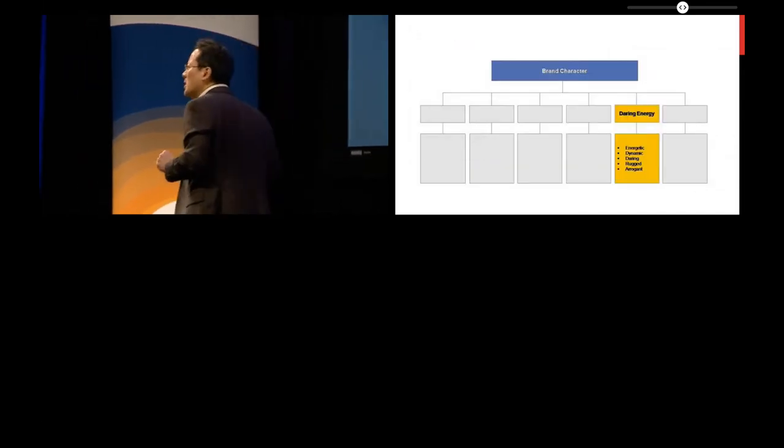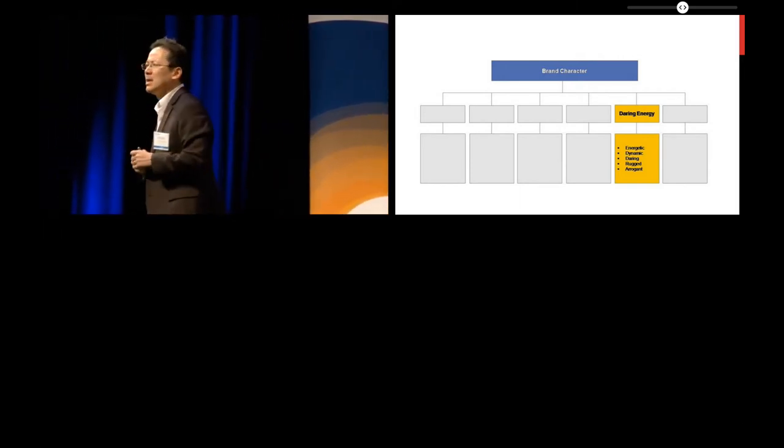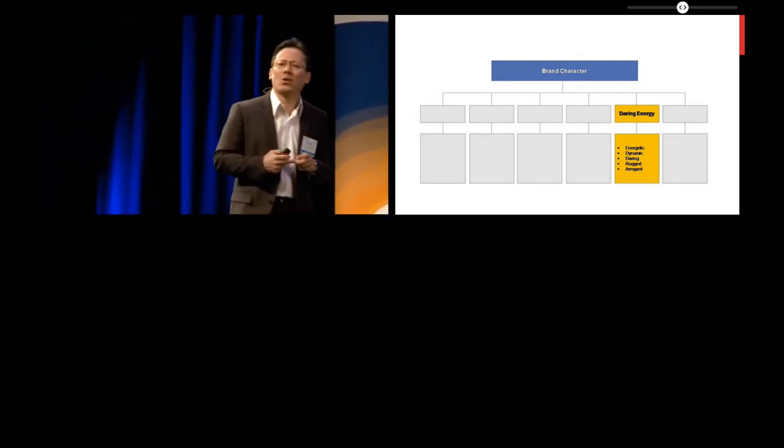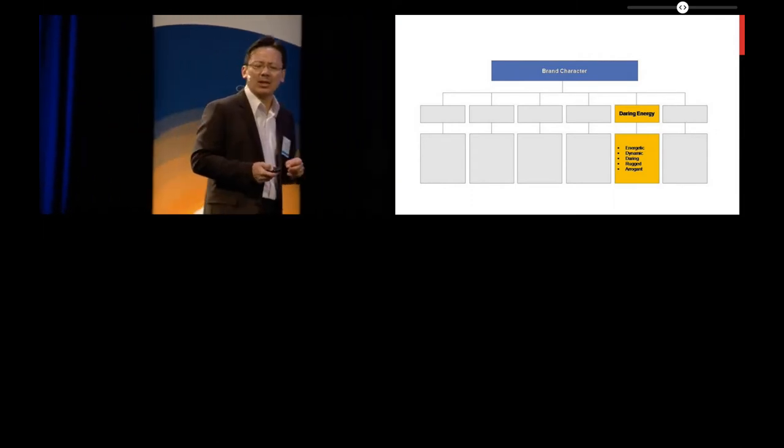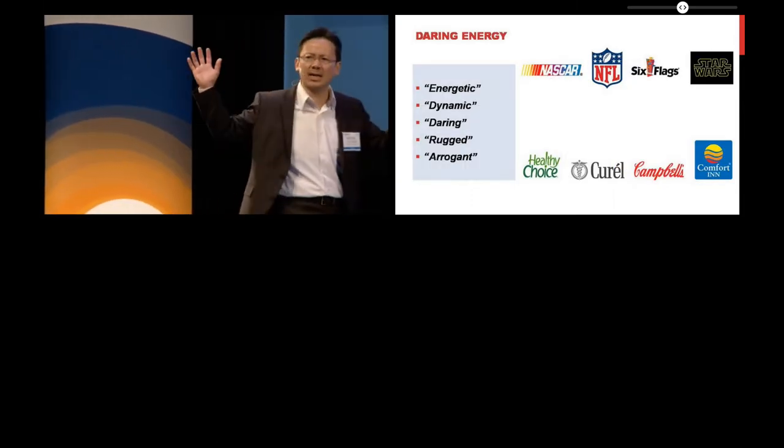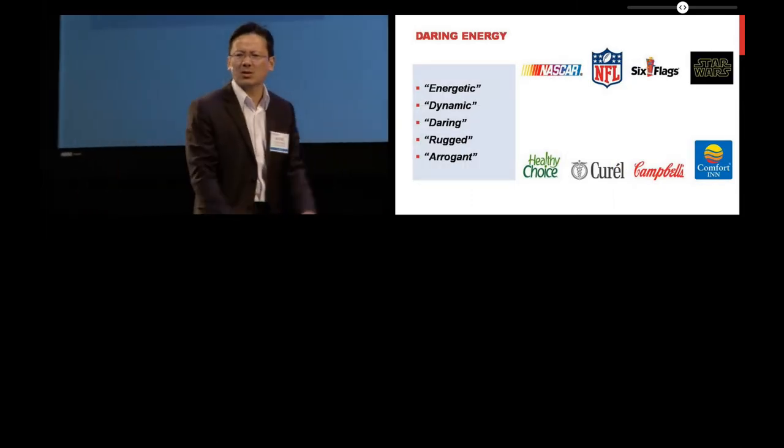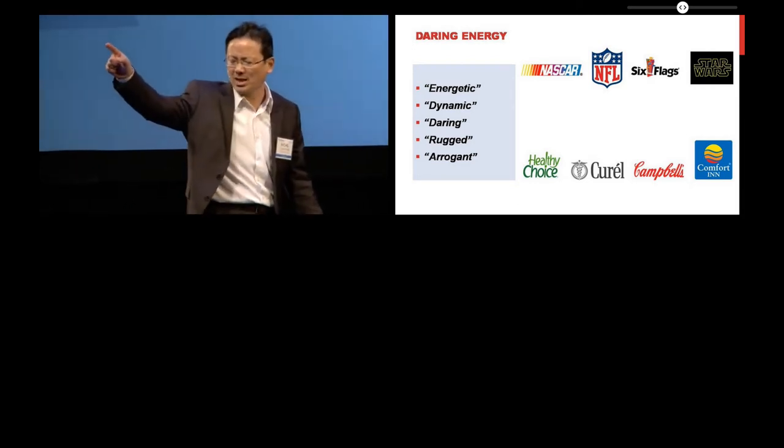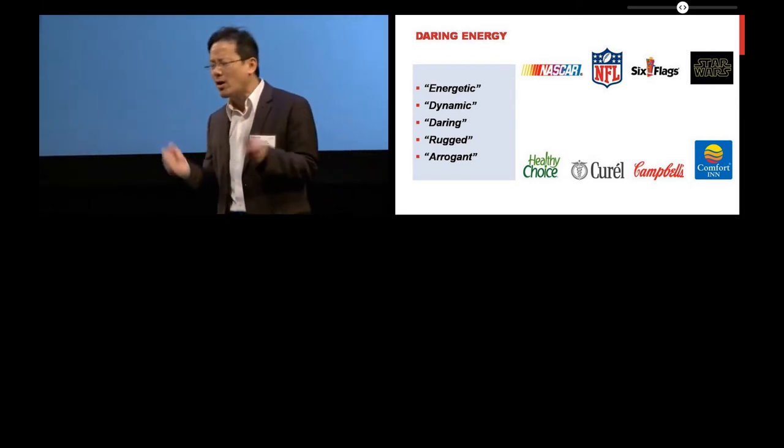The next dimension we found is something that you could call, for lack of a better term, daring energy. There are brands that stand out in terms of character because people say this is an energetic brand, dynamic, daring, it's rugged, it's arrogant. There are some brands that are very action-oriented, that are very confident, go-getter type of brands.